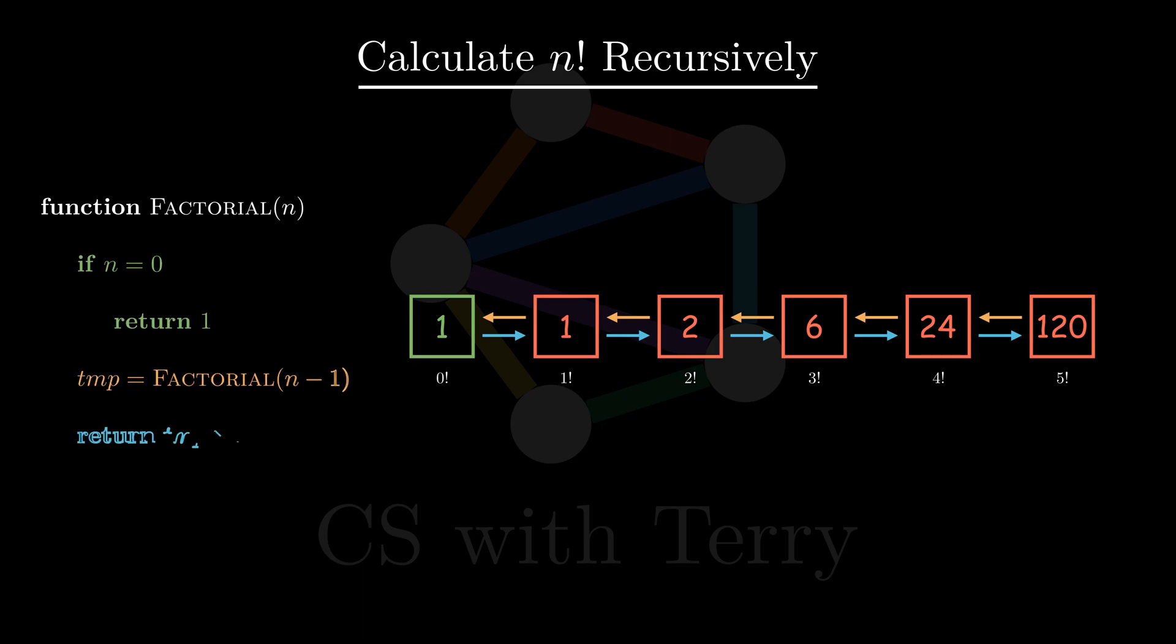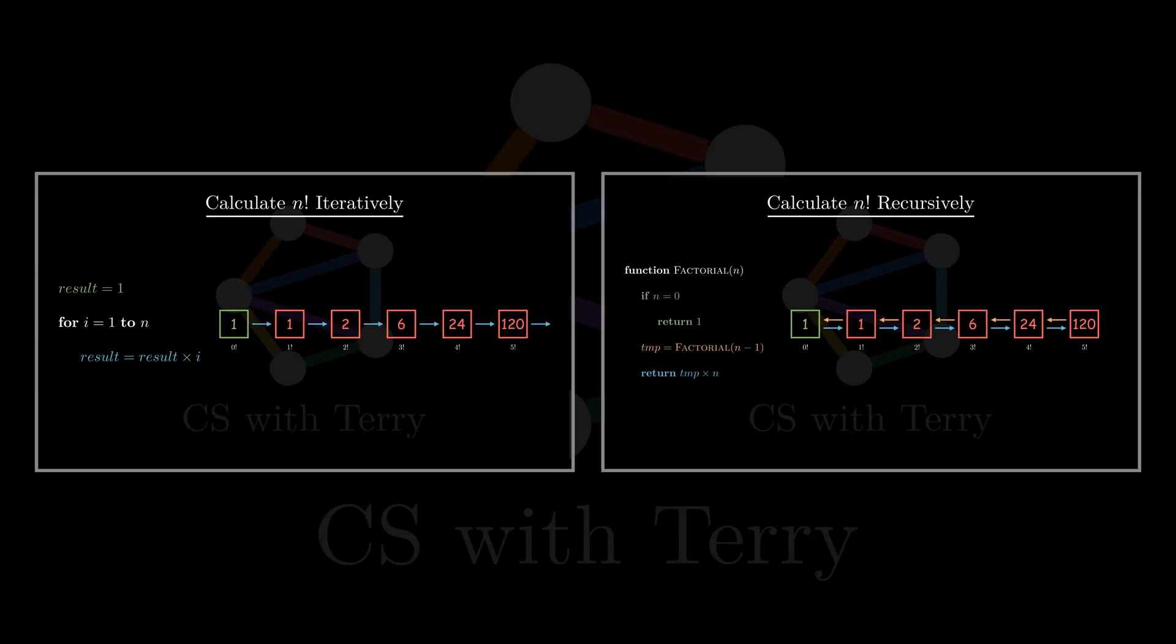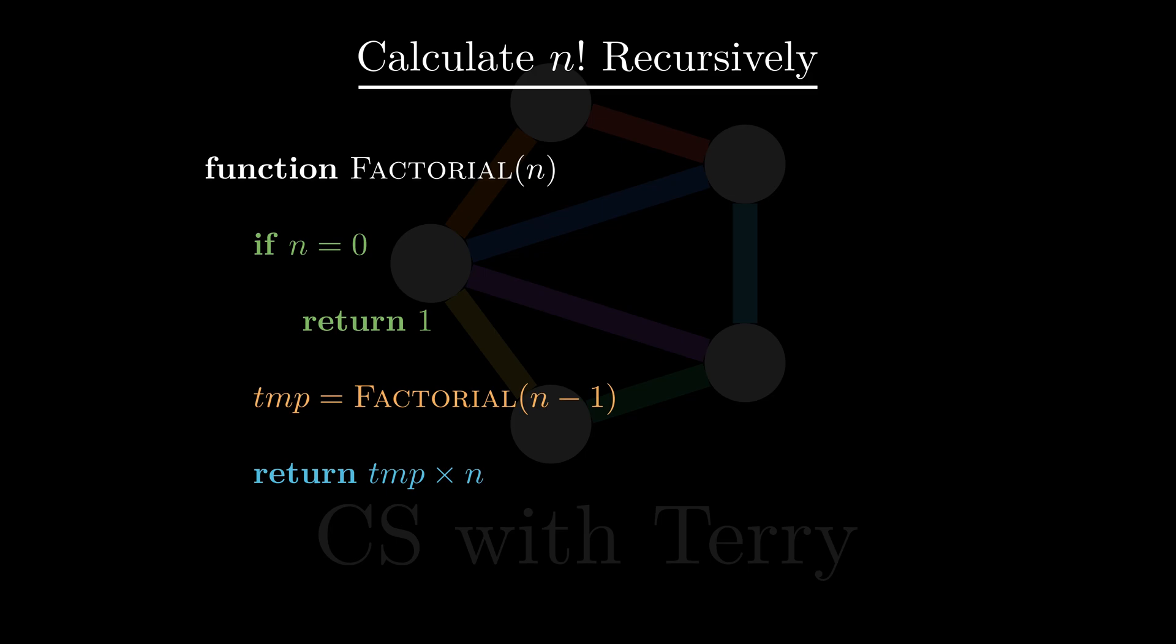Let's take a look at the recursive code. We define the function factorial, with the goal of calculating n factorial. When n is equal to 0, return 1 directly. This is the base case. Then we recursively call the factorial function to calculate n minus 1 factorial. Multiplying it by n yields n factorial, which we will return. This is the difference between iteration and recursion. Although this recursive code is simple, it embodies the essence of recursion. Let's break it down.